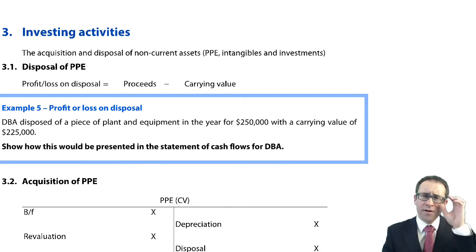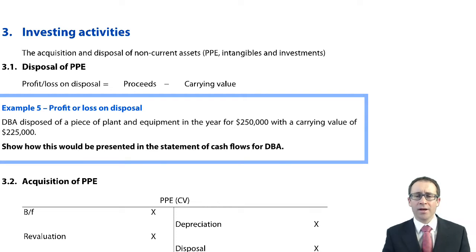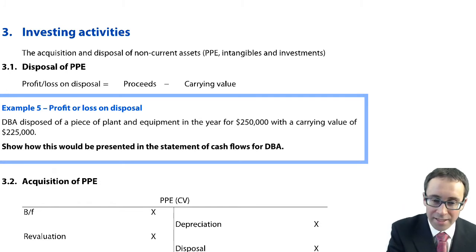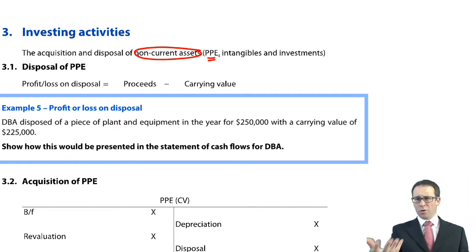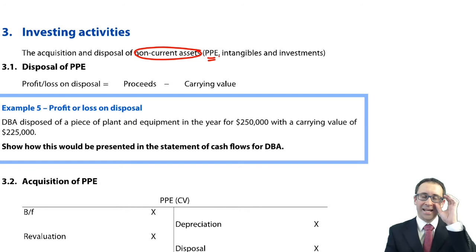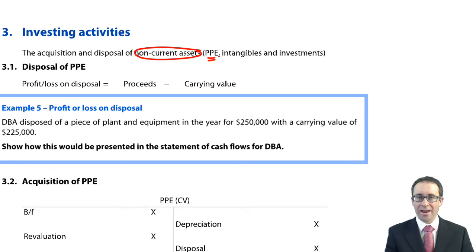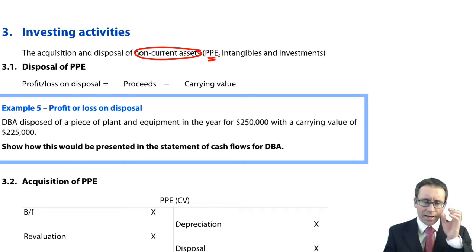In the real world, cash flows relating to investing activities are anything to do with your non-current assets. At this level it's PPE, but you could also buy and sell intangibles or investments. You'd be a bit unlucky to get anything on intangibles or investments though — the focus is on property, plant and equipment.